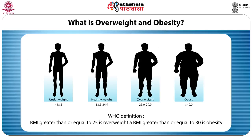According to WHO, overweight and obesity are defined as abnormal or excessive fat accumulation that may impair health. Overweight is having extra body weight from muscle, bone, fat or water. Obesity is having a high amount of extra body fat. Body mass index (BMI) is a useful measure of overweight and obesity. According to Nicolaitis 2018, obesity and overweight across the lifespan is an important public health issue, and it has been suggested that the track from childhood and adolescence to adulthood is linked to many other diseases.